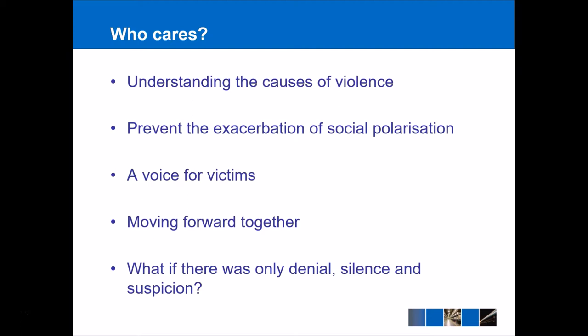So why should we have truth commissions? Why should they be put forward as an alternative means of transitional justice? If we have truth commissions, we can understand the causes of violence — it's about going to the root of the problem, understanding why human rights violations occurred, and then being able to address them. Preventing the exacerbation of social polarization is also important. Often when there has been a military dictatorship or, as we'll see, an apartheid regime as in South Africa, this has led to social polarization not only between communities but also within communities. Having the truth out there allows for these social groups to come back together and understand why they became polarized in the first place.